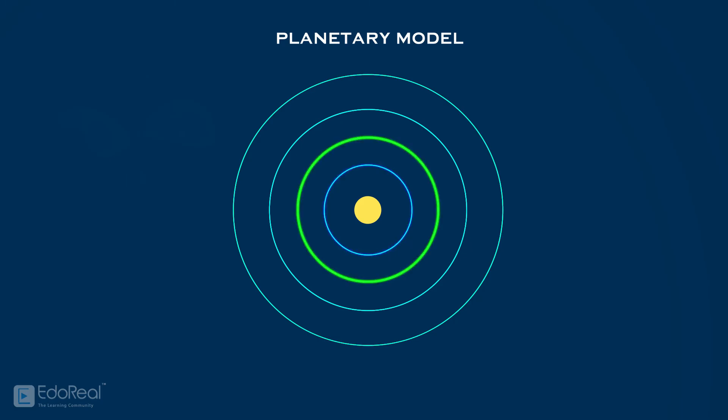To get a clear picture, we begin with a planetary model. The concentric circles are called orbits, represented with K, L, M, and so on, or with increasing order of energy levels 1, 2, 3, 4, and so on.